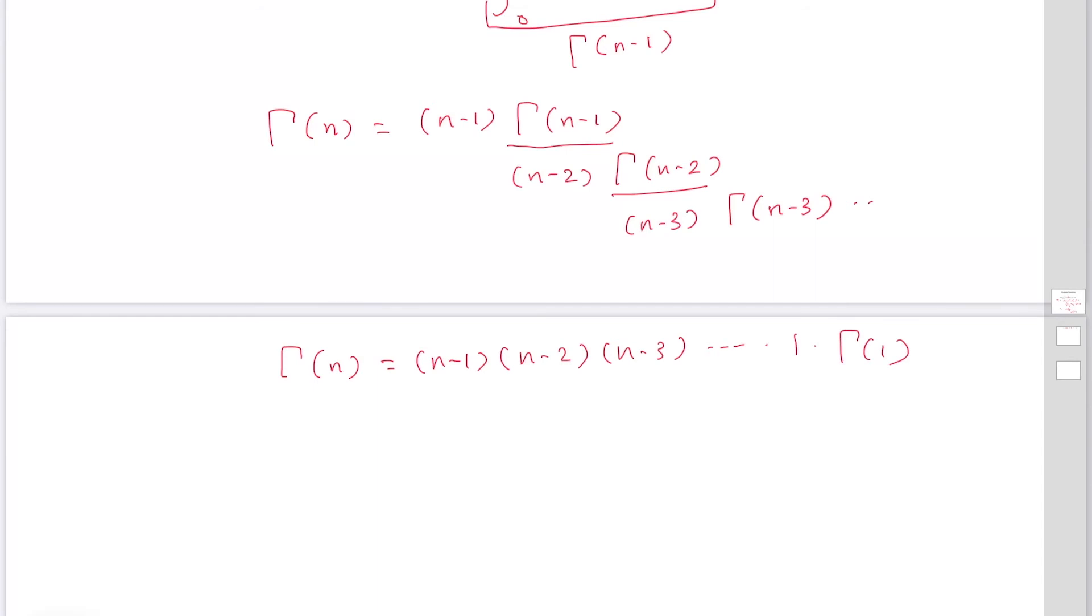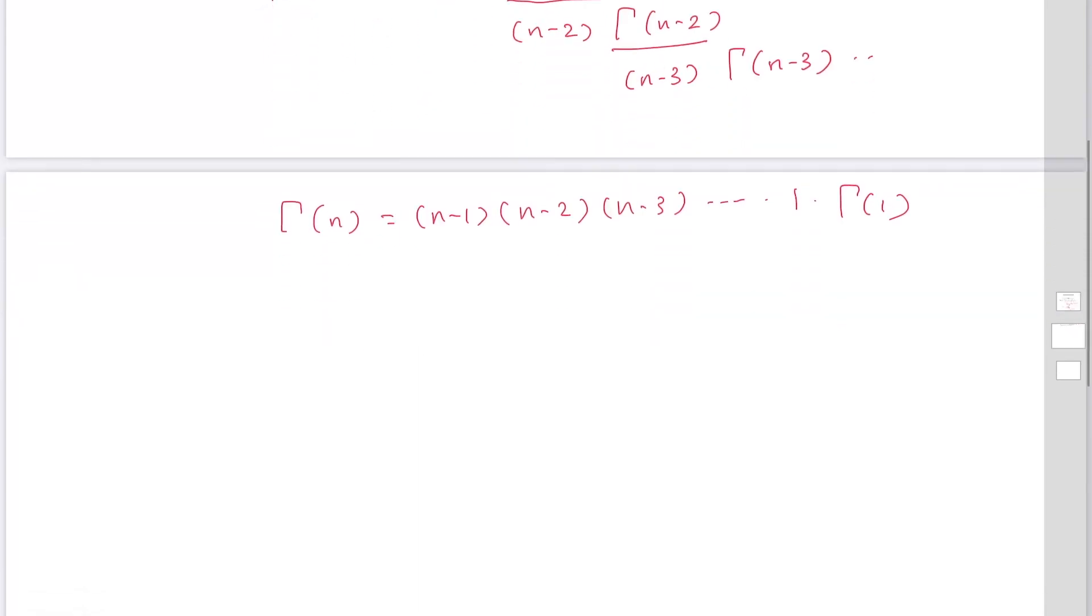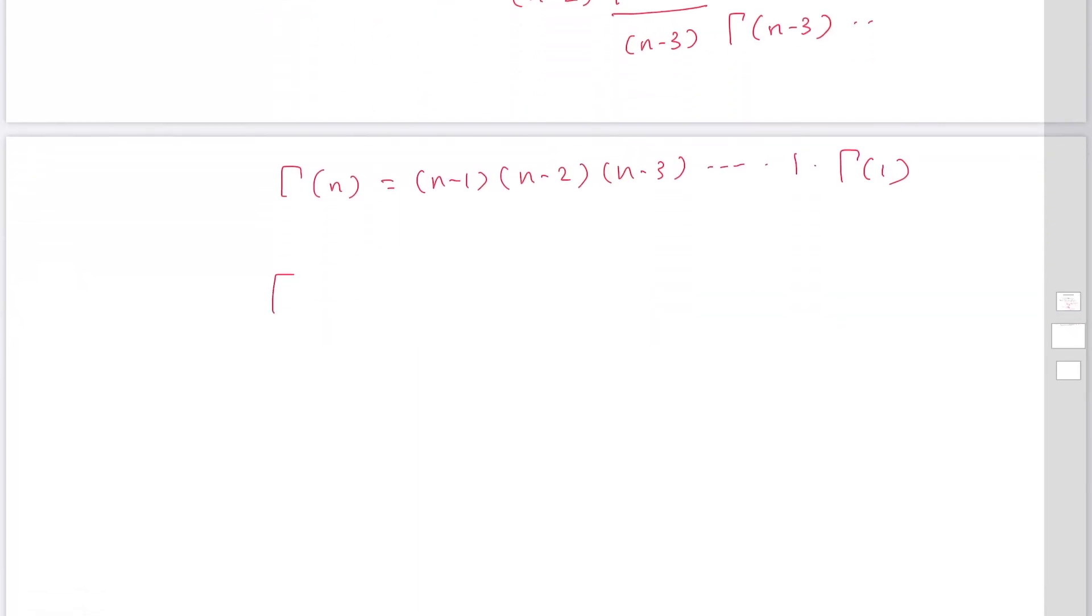So we need to calculate gamma 1 separately. For gamma 1, you can use the definition with n equals 1, so this becomes the integral from 0 to infinity of exponential minus x dx.